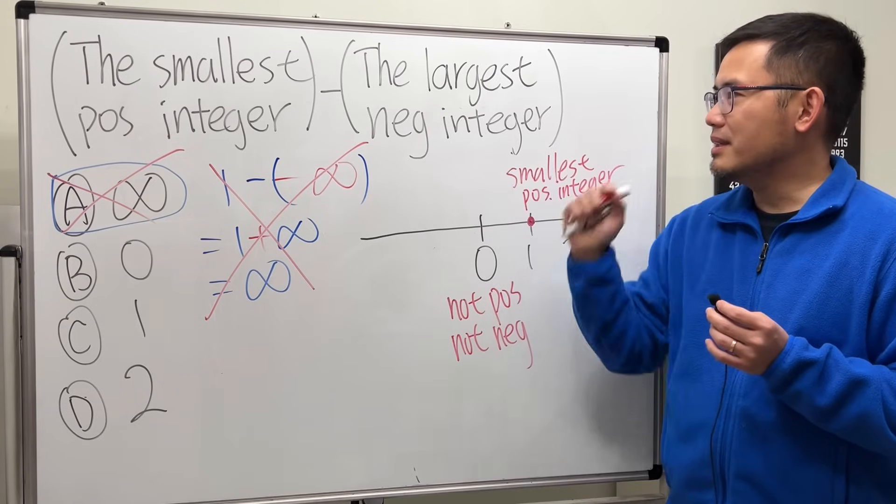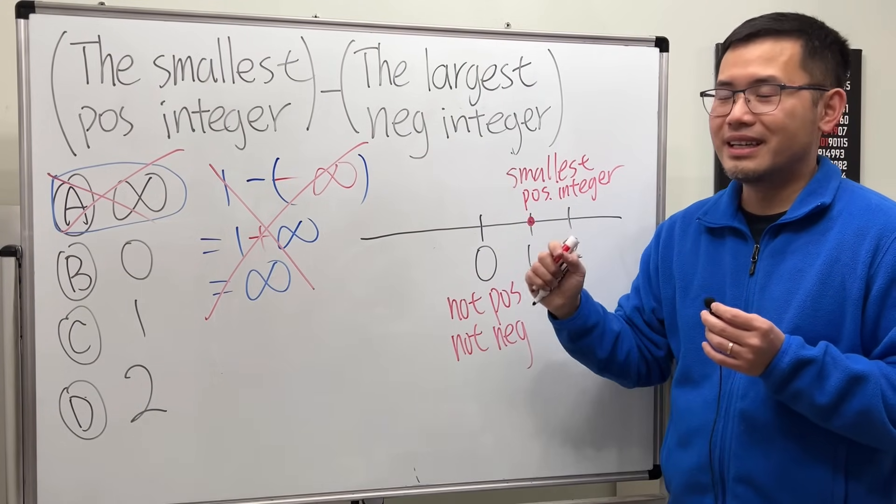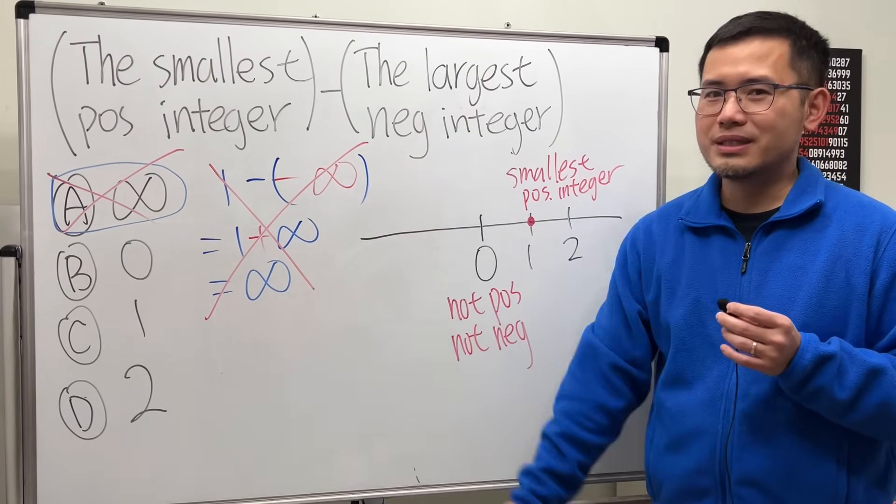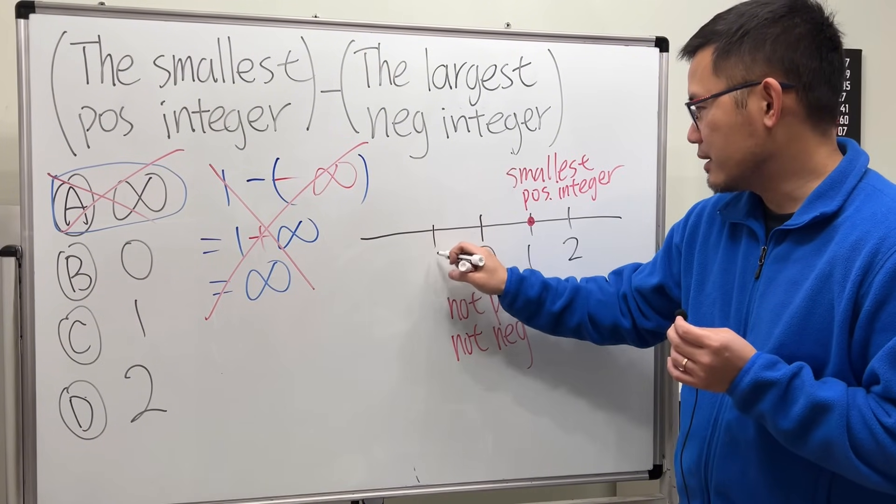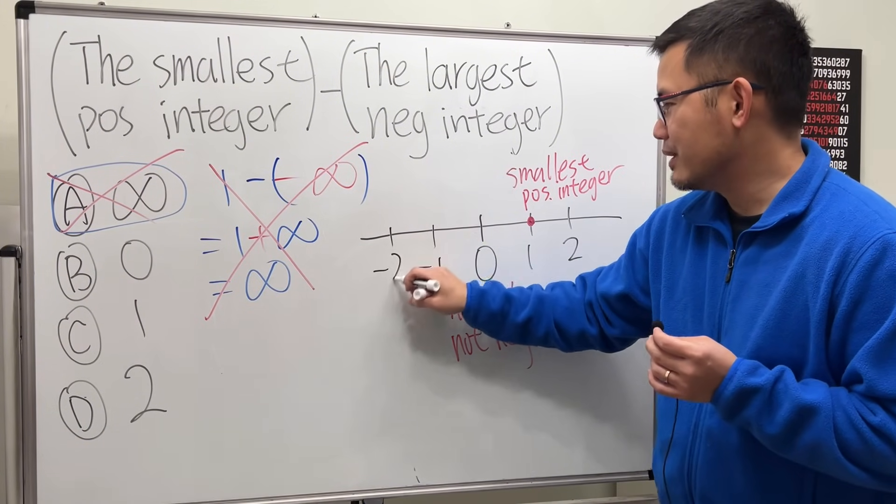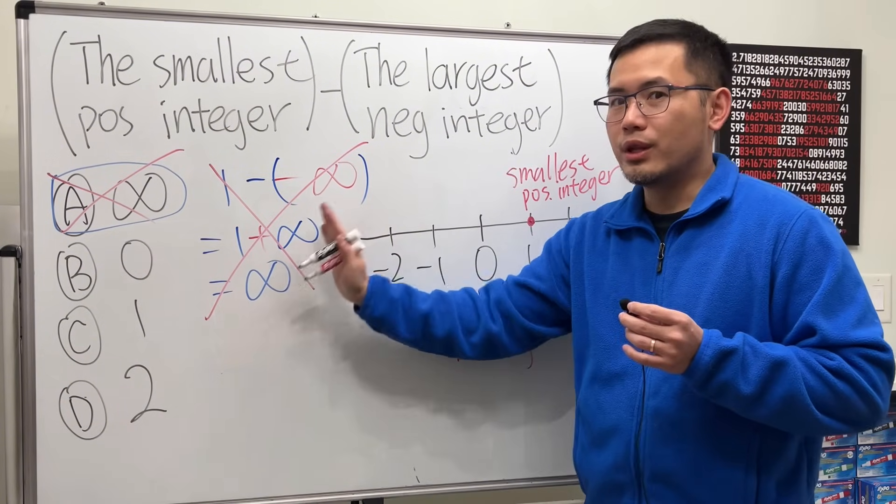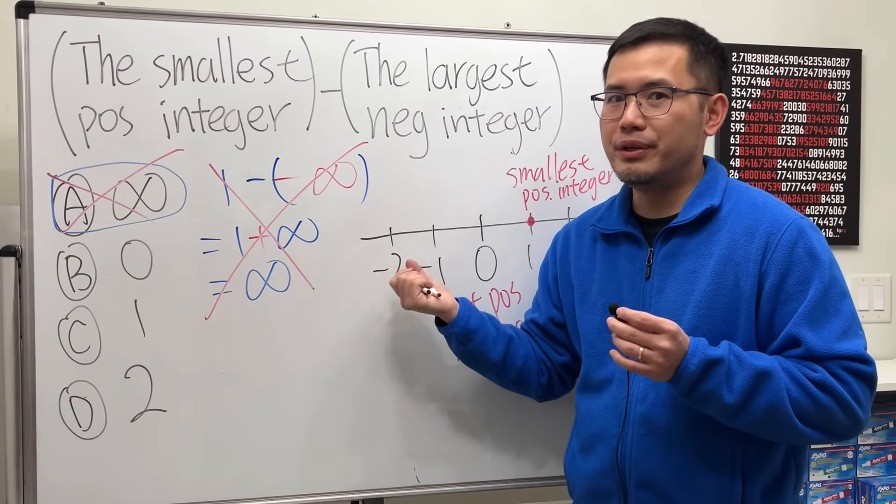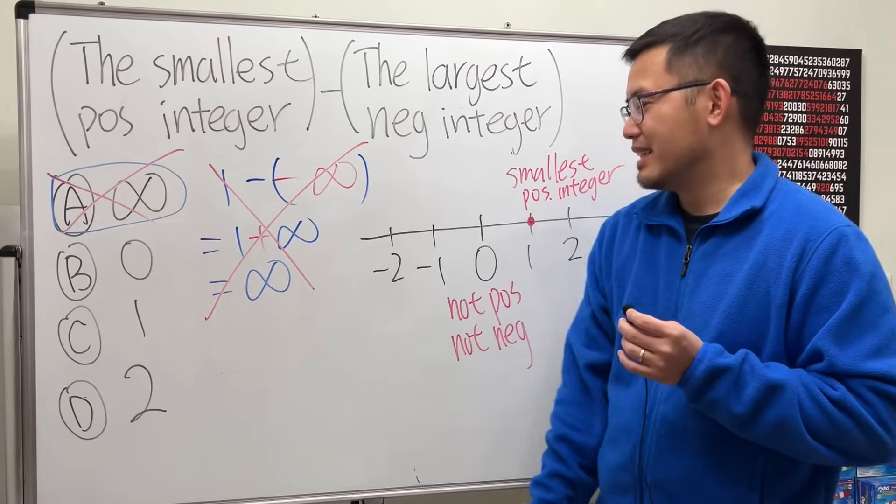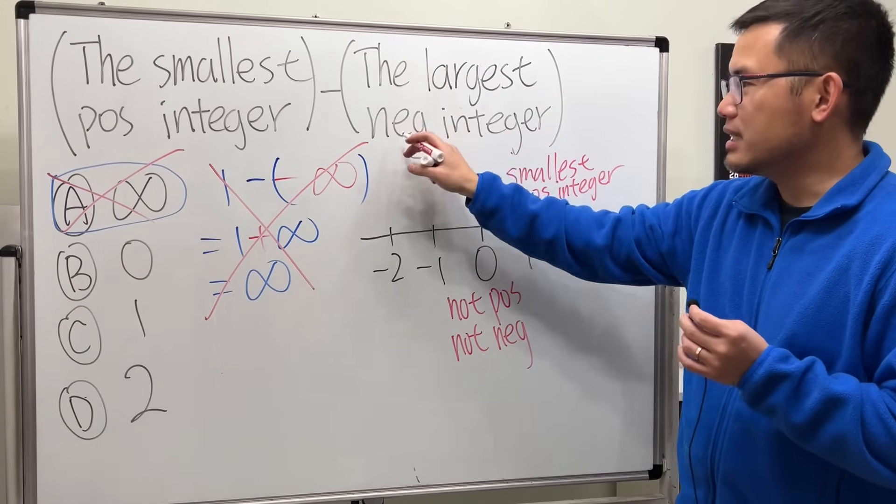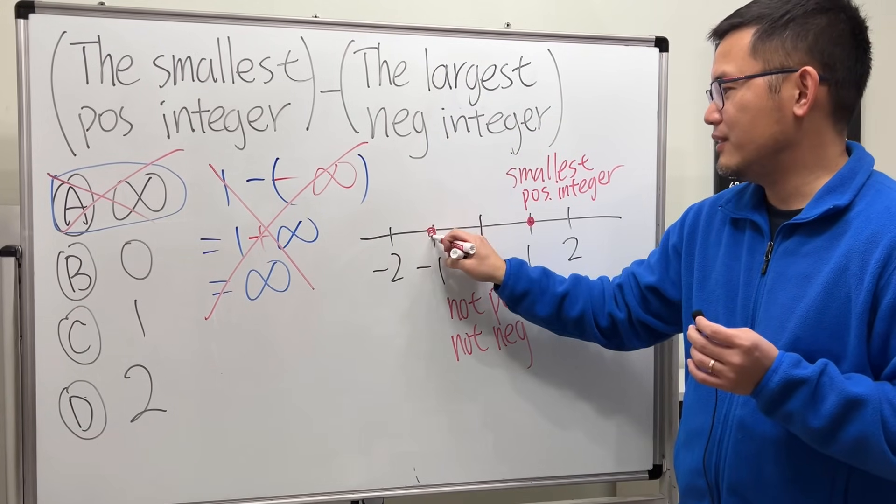Now what's the biggest negative integer? Negative integers are the numbers on the left, right? So we have negative one, negative two, and so on. But remember, anything toward the right on the number line is bigger than whatever on the left. So in fact, the largest negative integer is negative one.